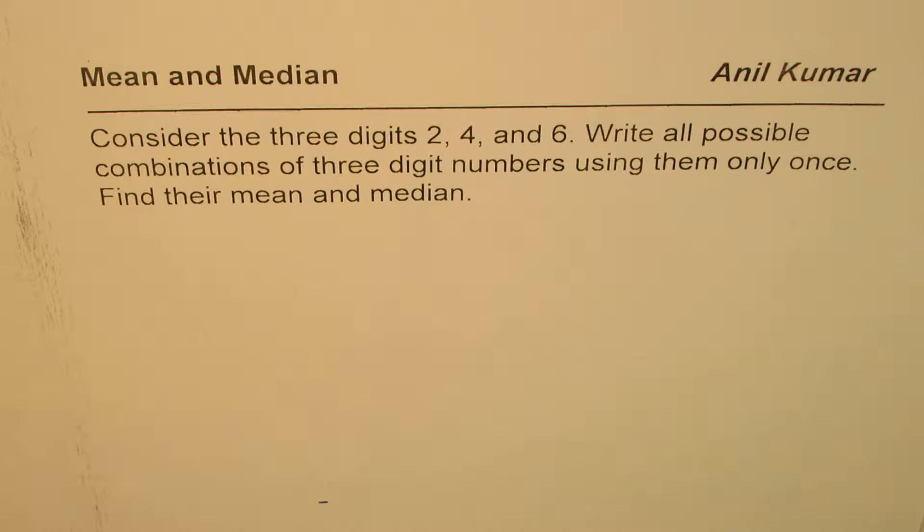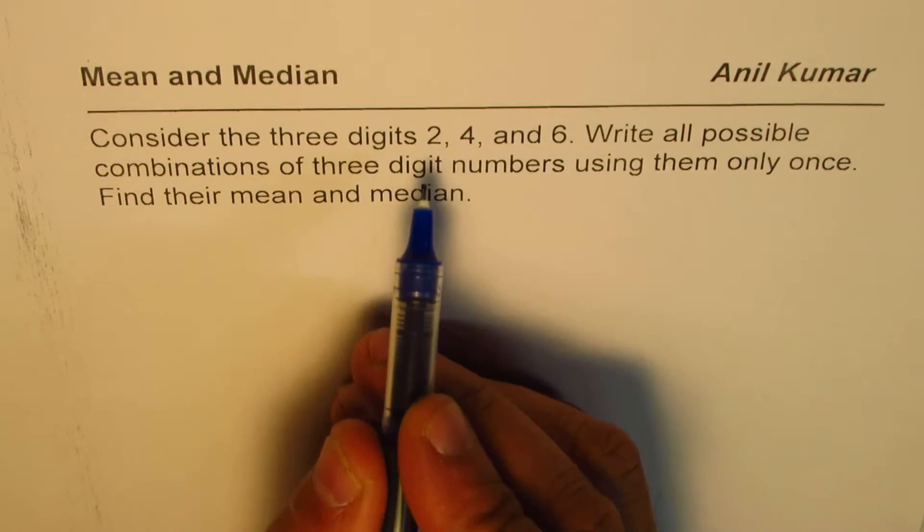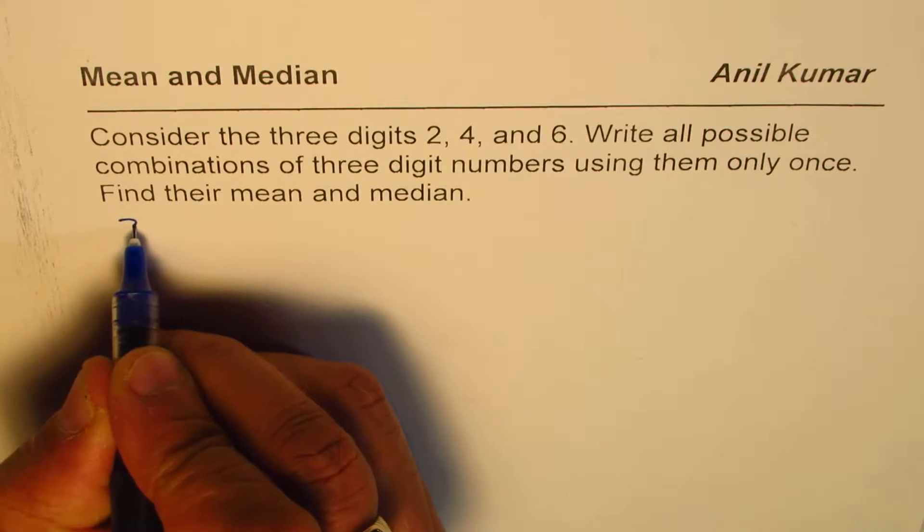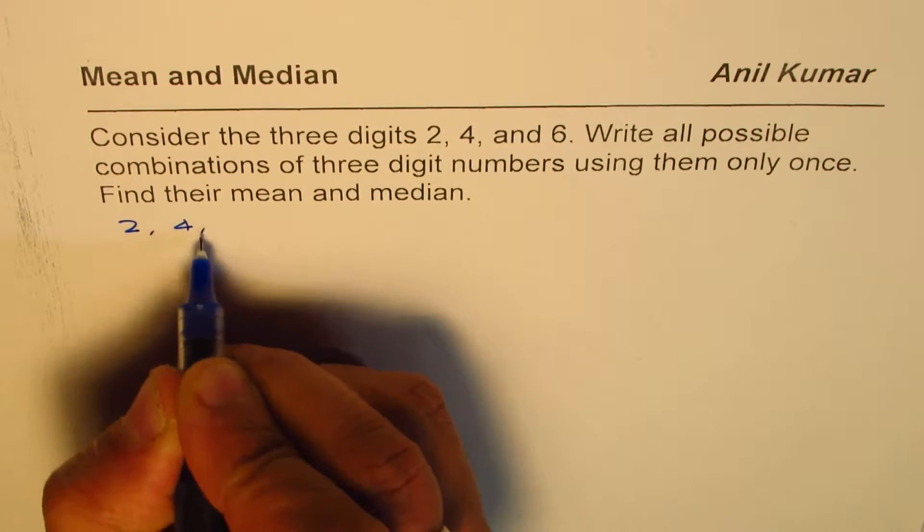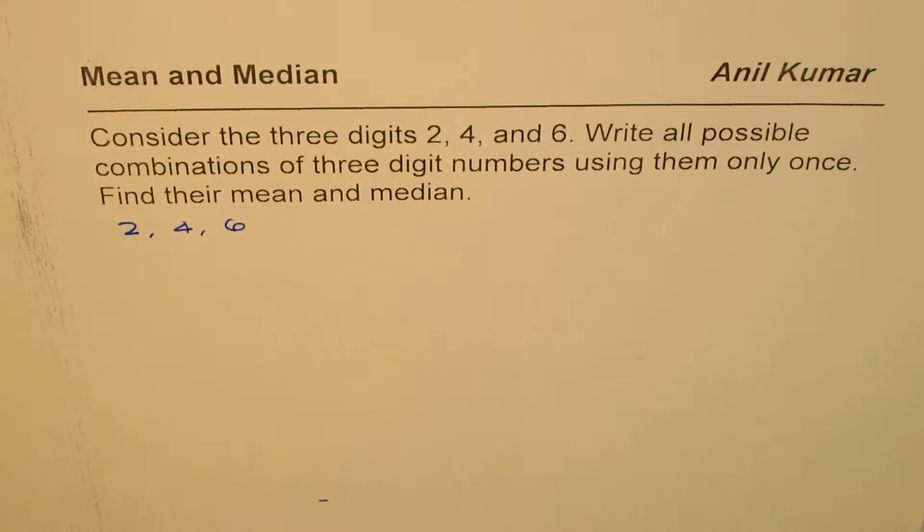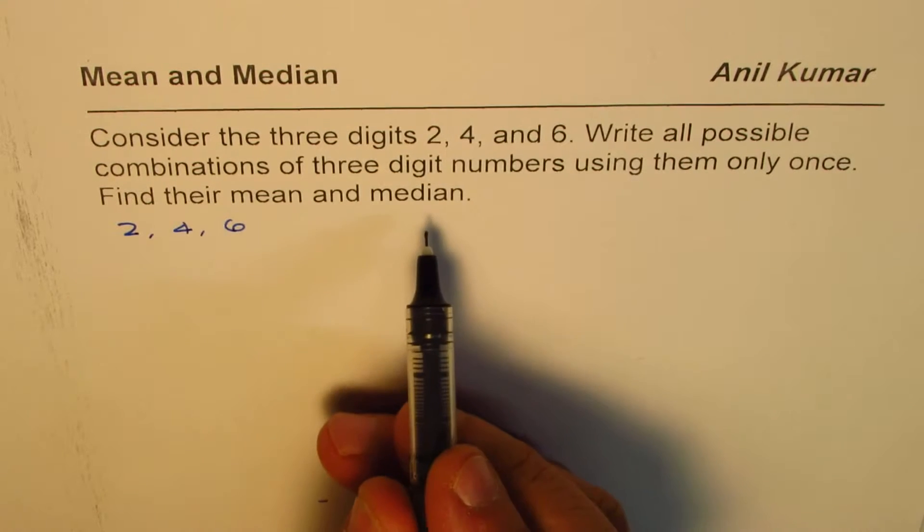You can actually pause the video, answer the question, and then look into my suggestion. So, we are given three digits 2, 4, and 6. With these digits we have to make three-digit numbers and then find mean and median.